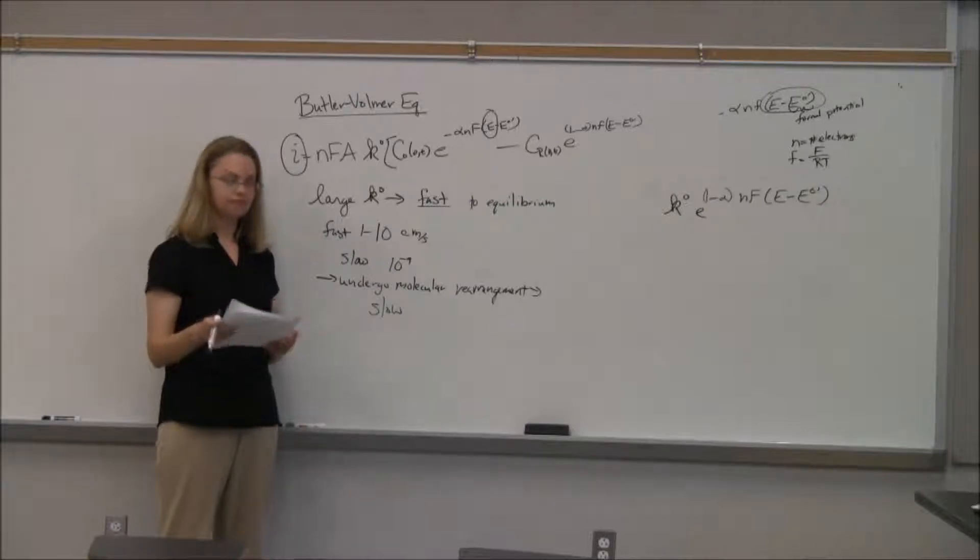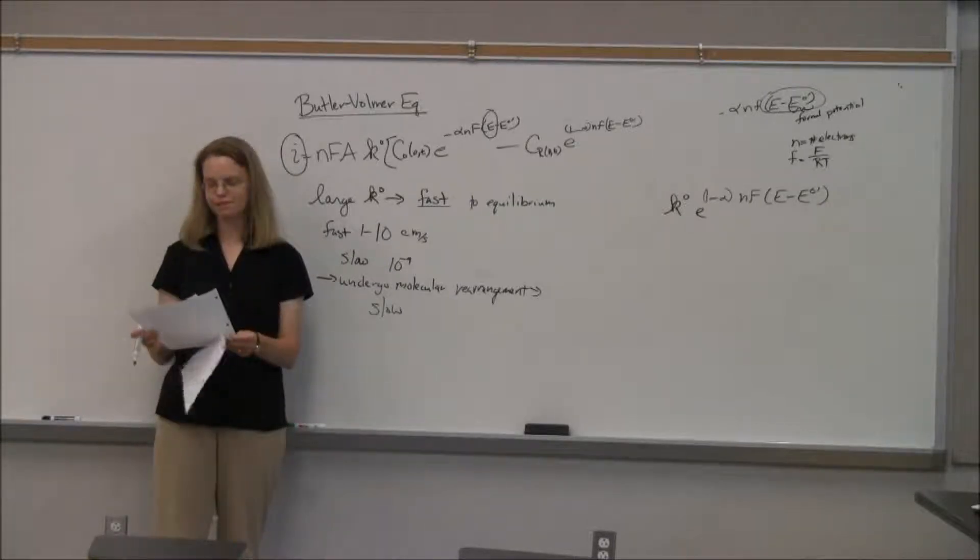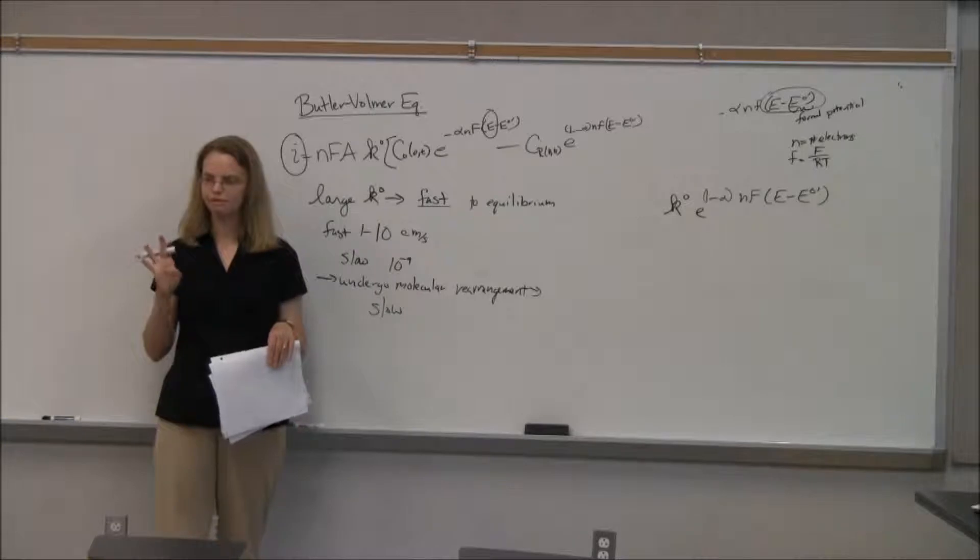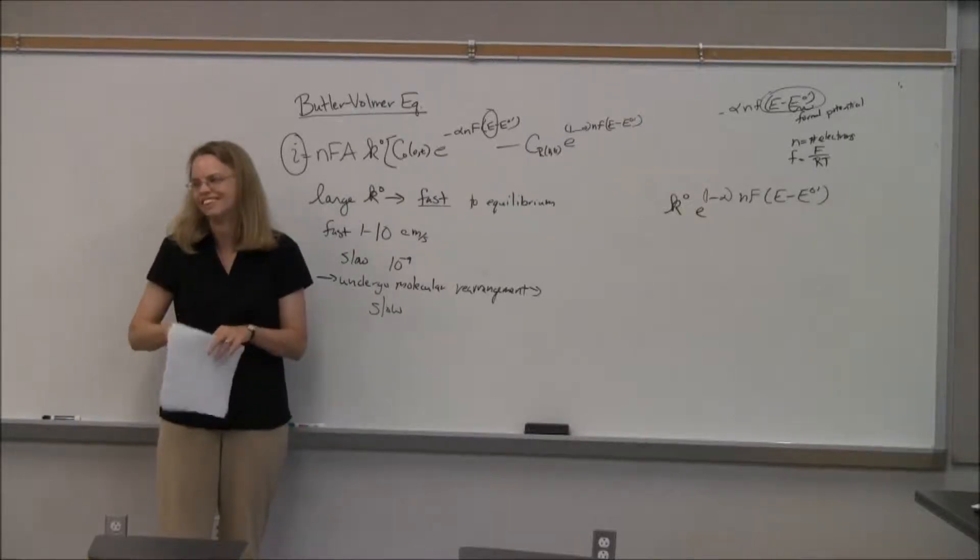Slow rate constants are like maybe 10 to the minus 6, something like that. But just to give you an idea of what the range might be. Anything that requires you to undergo any sort of molecular rearrangement automatically kind of falls in this slow category. So if you have to transfer an electron, if your molecule has to rearrange somehow, that's not going to be a really fast process as you go along.